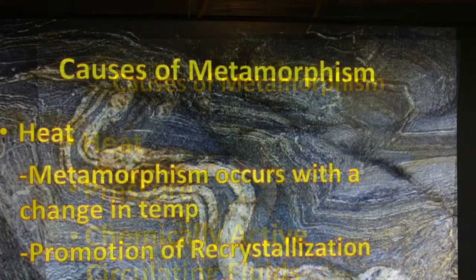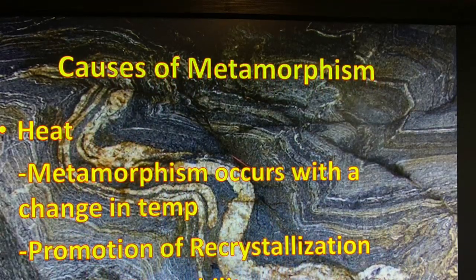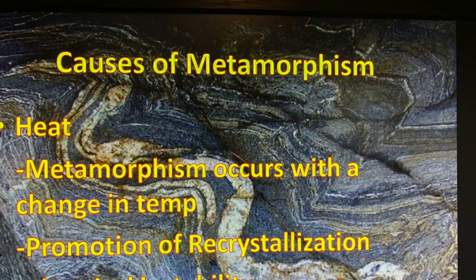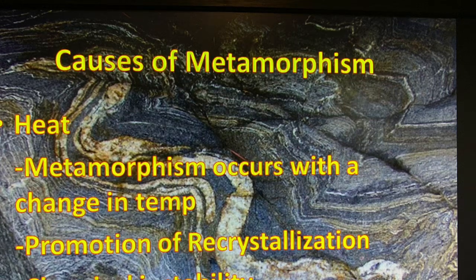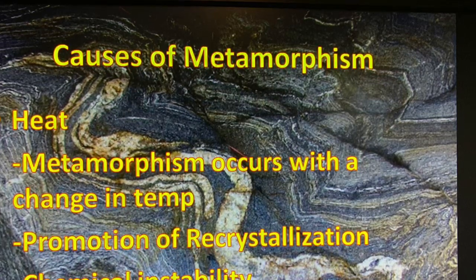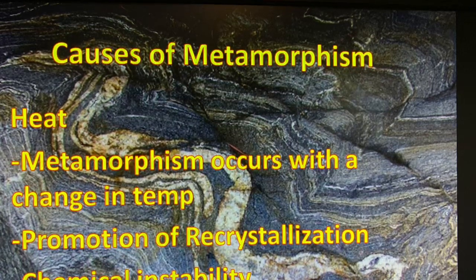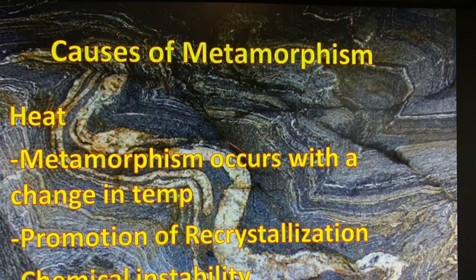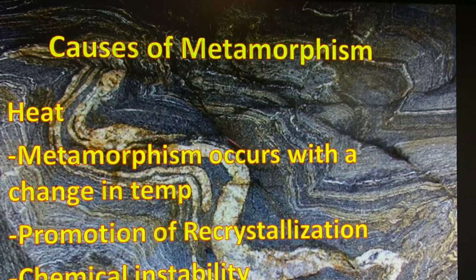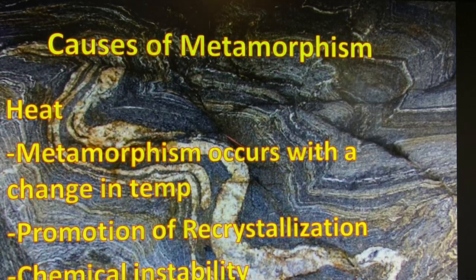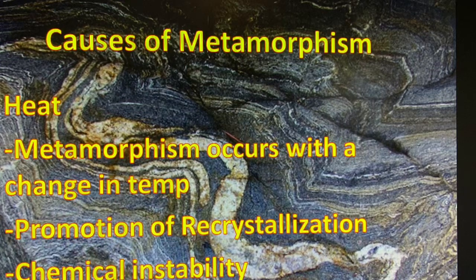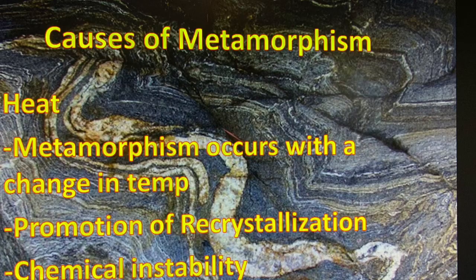The first cause is heat. When you add heat — thermal energy — to a rock, the molecules and atoms start behaving differently. Different substances have different specific heats. What starts to happen inside the rock is a process called recrystallization: old crystals break down and new ones start to form. This can also cause the rock to become slightly chemically unstable, making the chemistry inside more volatile and changeable.